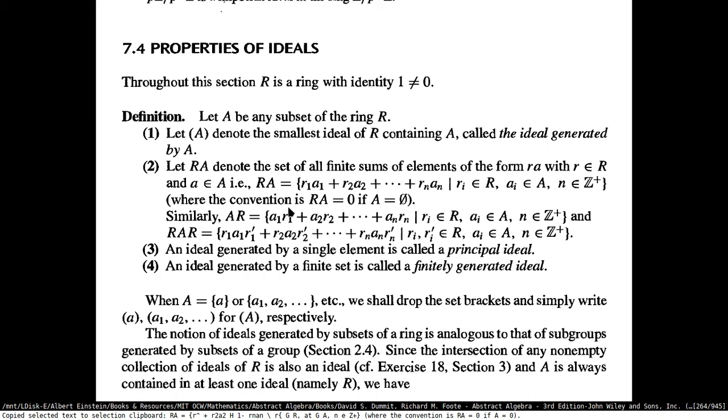If your subset is the null set, then RA just contains the additive identity, that is zero.